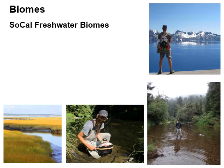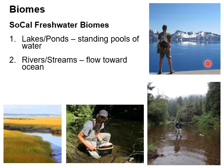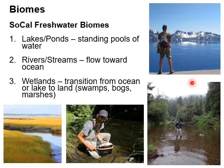Freshwater biomes in Southern California include lakes and ponds — standing pools of water like Crater Lake in Oregon. Rivers and streams are water that is moving, flowing out toward the ocean. And wetlands are transitions from either a freshwater or oceanic biome to land. These are places where we have a transition from water to land, such as marshes, bogs, and swamps.